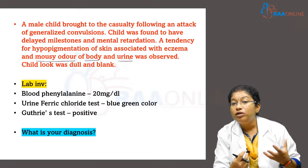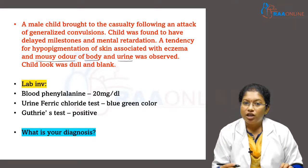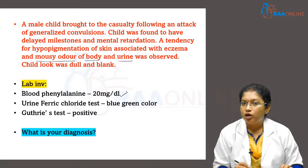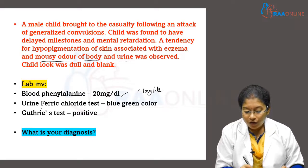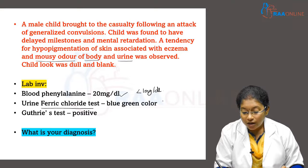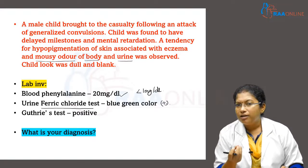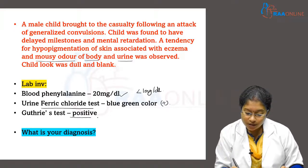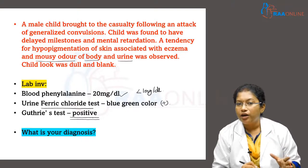The lab investigation showed blood phenylalanine at 20 milligrams per deciliter; normally it is less than 1 milligram per deciliter. The ferric chloride test was positive, giving a transient blue-green color, and Guthrie's test was also positive.